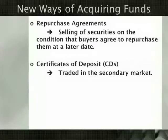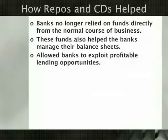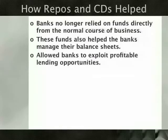This meant bankers had to devise a variety of alternative devices to acquire funds. Some of these new ways included repurchase agreements, or repos, and certificates of deposit, or CDs. Repurchase agreements involve the selling of securities on the condition that the buyers will repurchase these securities at a stated date in the future, and certificates of deposit can be traded in the secondary market. Having discovered new ways to acquire funds, banks no longer waited for funds to arrive through the normal course of business. These new approaches enabled banks to manage the liability as well as the asset side of their balance sheets.